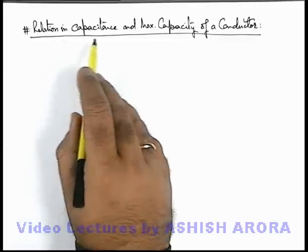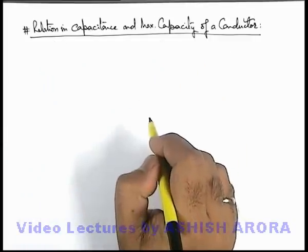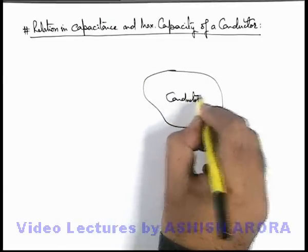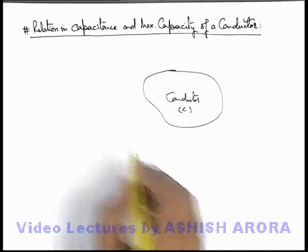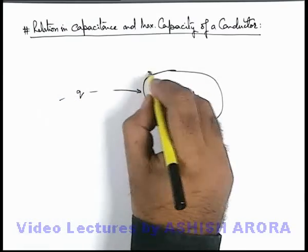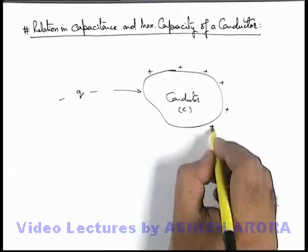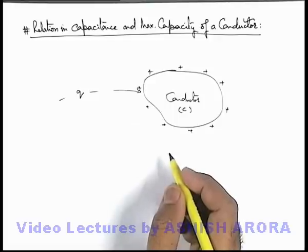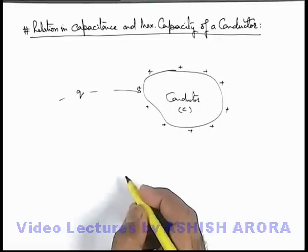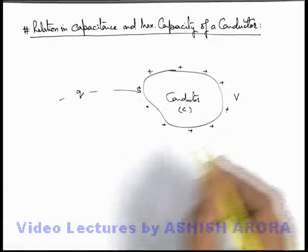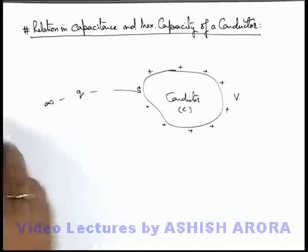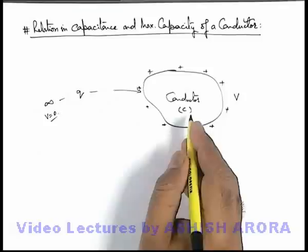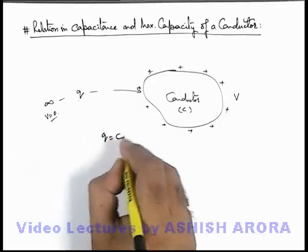Let's discuss the relation in capacitance and maximum capacity of a conductor. For a given conductor — a metal body — if its capacitance is C and we supply a charge Q to it, it'll be distributed on the outer surface such that its surface charge density is inversely proportional to the radius of curvature of the shape of the metal body. In this situation, its potential becomes V, with reference taken as zero at infinity. So the relation between charge and potential is Q = CV.